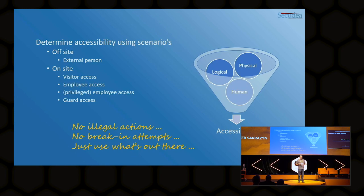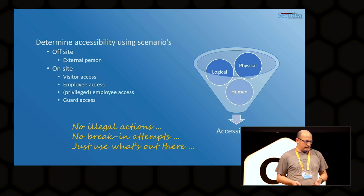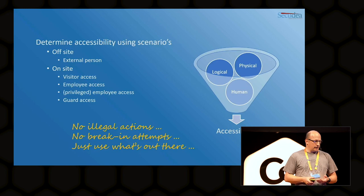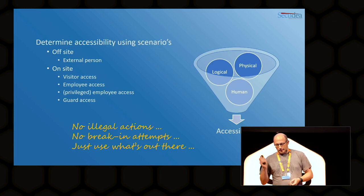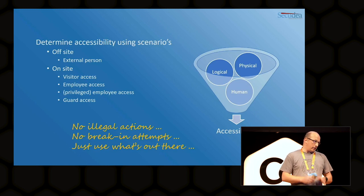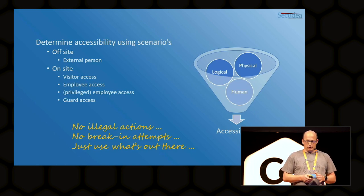For example, off-site you have an external person — somebody who can visit your site. On-site you have visitor access, employee access, privileged employee access with extra badges, and guard access. Don't forget the cleaning crew or other people walking around. All the things I will show in the slides have been done without any illegal actions, without breaking attempts — just using what's out there, just what's available.